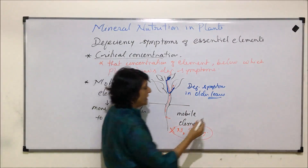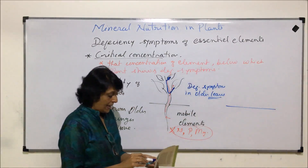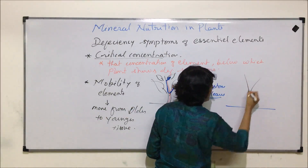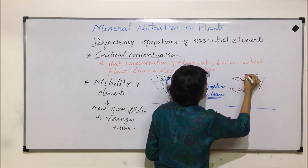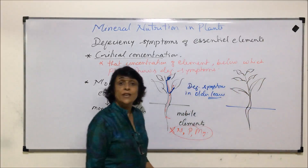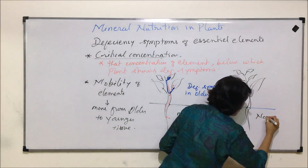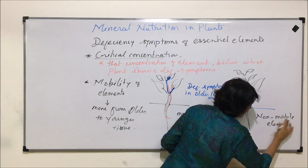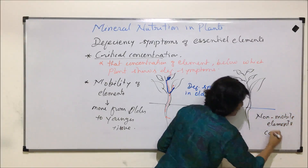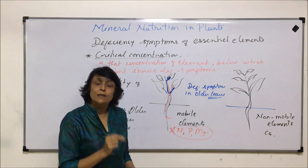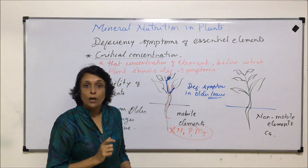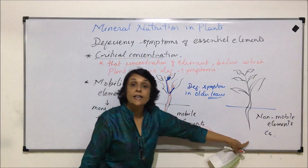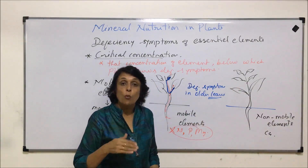Now consider a plant in a similar situation, but with non-mobile elements — elements that do not move from older to younger tissue. Here we take the example of calcium. Calcium is a part of the middle lamella and the cell wall, and it remains there. Because it does not dissociate, it will not move from older to younger parts.